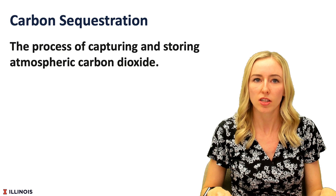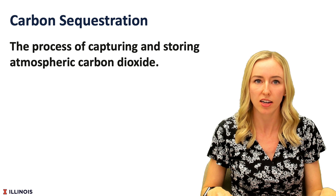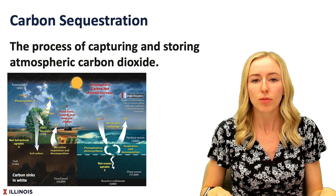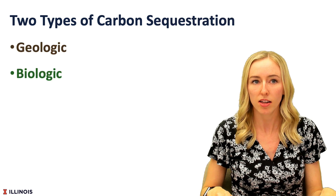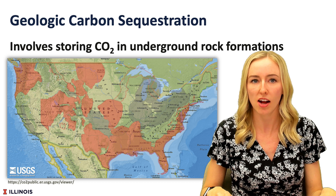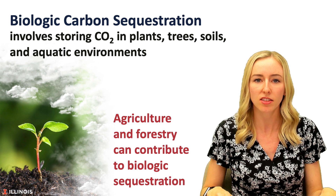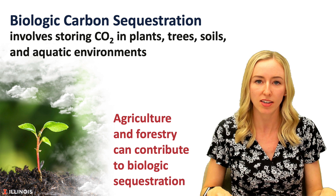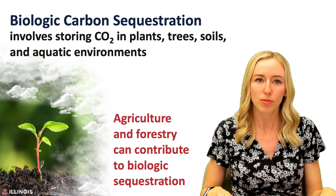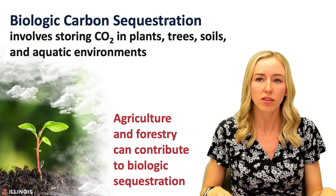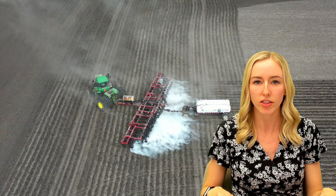Everything is put into terms of carbon dioxide because carbon dioxide is the most commonly released greenhouse gas caused by human activities, and it has the largest total impact on global warming. Carbon sequestration is the process of capturing and storing atmospheric carbon dioxide. The place where the carbon dioxide is stored is called a carbon sink. There are two main types of carbon sequestration: geologic and biologic. Geologic involves storing carbon dioxide in underground rock formations, while biologic involves storing carbon dioxide in plants, trees, soils, and aquatic environments. Agriculture and forestry can contribute to biologic sequestration through the storage of carbon dioxide in trees, plants, and soils, and by reducing emissions. For example, a farmer could reduce or change the timing of their nitrogen applications to reduce nitrous oxide emissions.